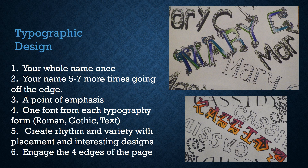For the next art journal page you will practice typography using your first name. On one page you will write your definitions. On the opposite page you do not need a ground. Use your first name five to seven times going off the edge of the page. One time you have to use your whole first name as a point of emphasis by either adding color to it, playing with the size, or making it a little more decorative than everything else.